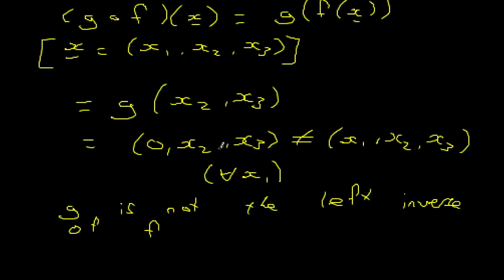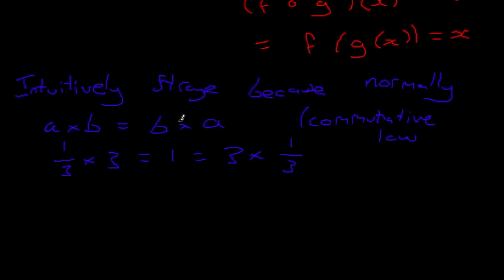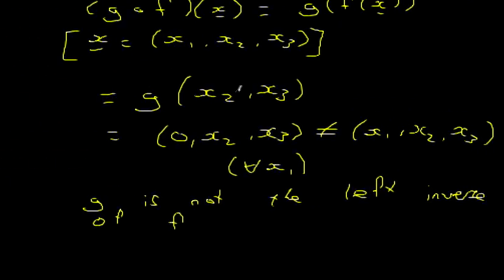So this is how the left inverse and the right inverse can actually differ. But the reason this is confusing is because, as we said earlier, this is not in agreeance with the commutative law. Normally, if something is an inverse one way, it's also an inverse the other way, but with functions, in particular, with function composition, this is not always true, as we've seen here.